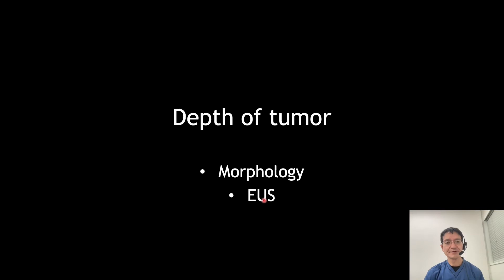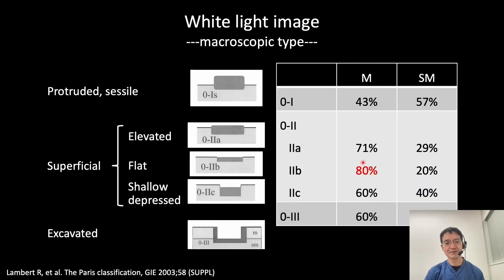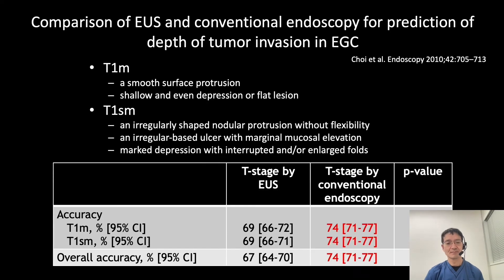Next, I will explain how to make a diagnosis of depth of tumor invasion of early gastric cancers. One simple method to estimate depth of tumor invasion is morphology. When the lesion is totally flat, about 80% of lesions are intramucosal. For other morphologies, we have to estimate depth of tumor invasion by some methods. One retrospective study from Korea suggested that morphological assessment in white light imaging showed better diagnostic accuracy compared to EUS.